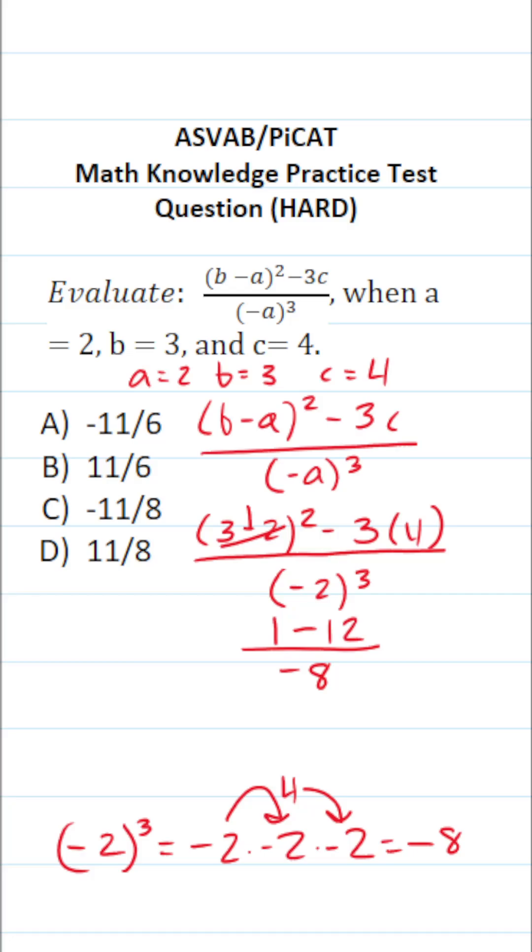What is 1 minus 12? That's going to be negative 11 over negative 8. A negative divided by a negative is a positive. So this becomes 11 over 8. So the answer to this one is D, positive 11 over 8.